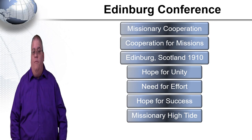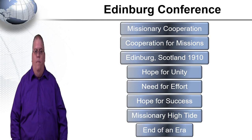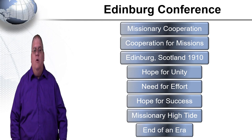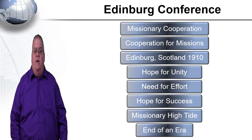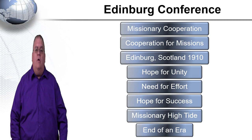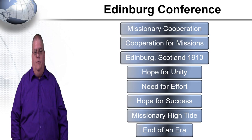This conference also marked the end of an era where the church was mostly white and Western. At Edinburgh, only 18 of the 1,200 delegates were non-Western. But in later conferences that came out of this, the number of non-Western representatives greatly expanded. The cooperative work continued after the conference and eventually led to the World Council of Churches.